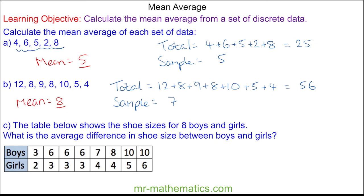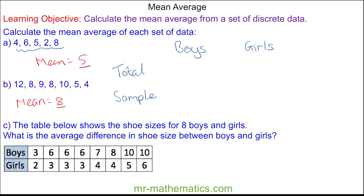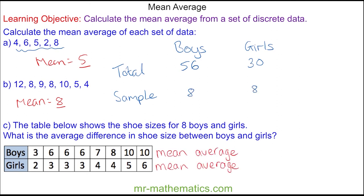Okay, so you can see the total for the boys is 56 and the total for the girls is 30. There is a sample size of 8 for each. So the mean average shoe size for boys is 56 divided by 8, which is 7, and for girls 30 divided by 8, which is 3.75. So on average boys have a shoe size which is 3.25 greater than for girls.